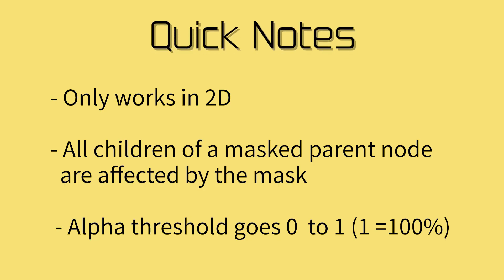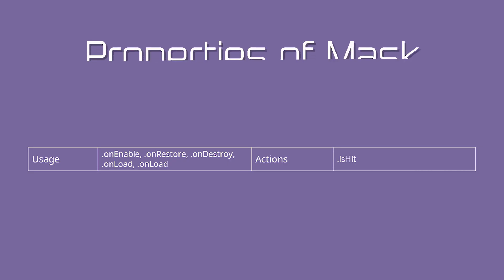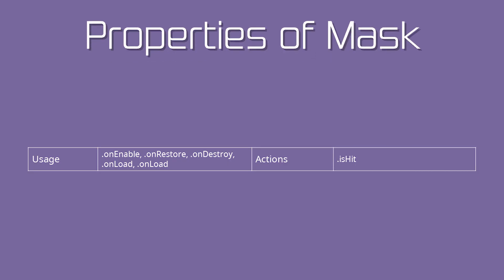Some quick notes: masking only works in 2D, and all nodes that are children of the mask will be affected by the mask. The Alpha Threshold can go from 0 to 1. All the APIs for the mask are available in the CC module. Link in the description.